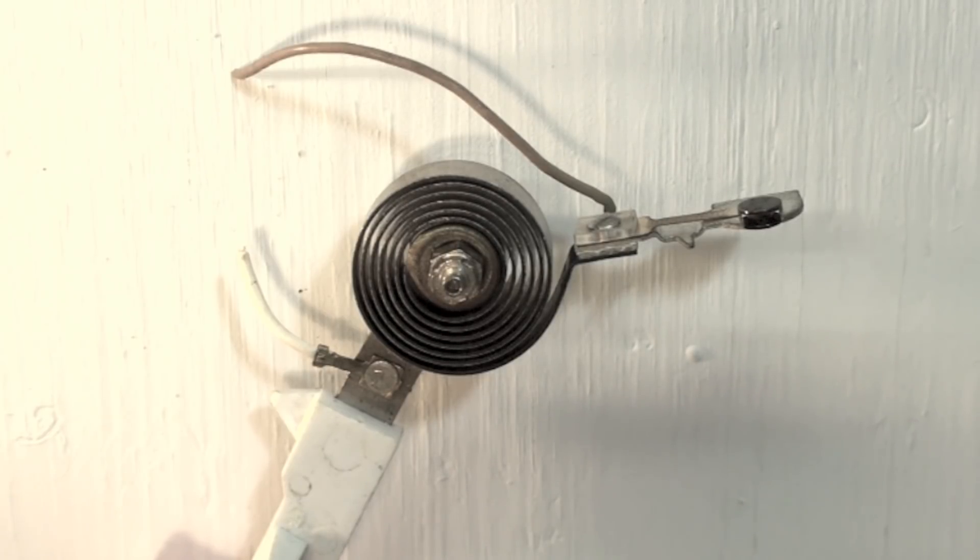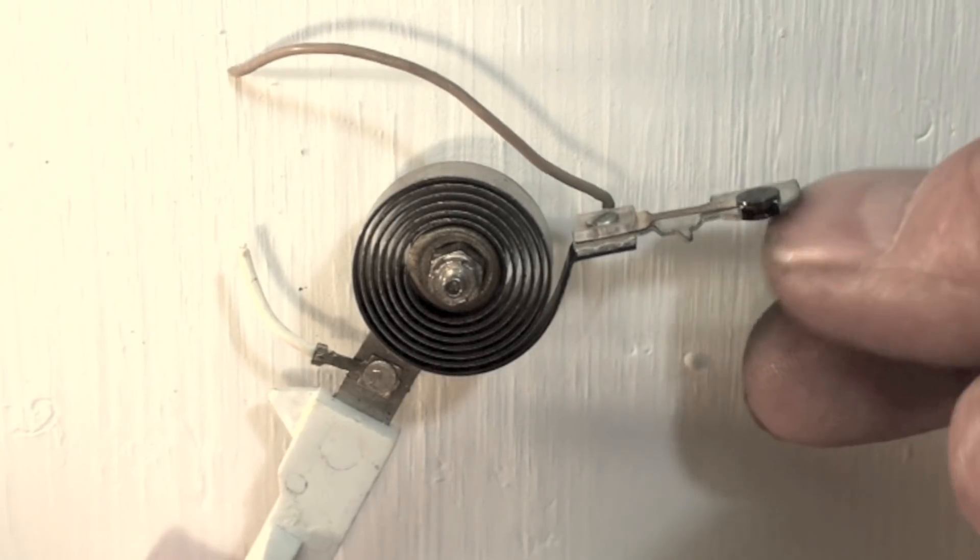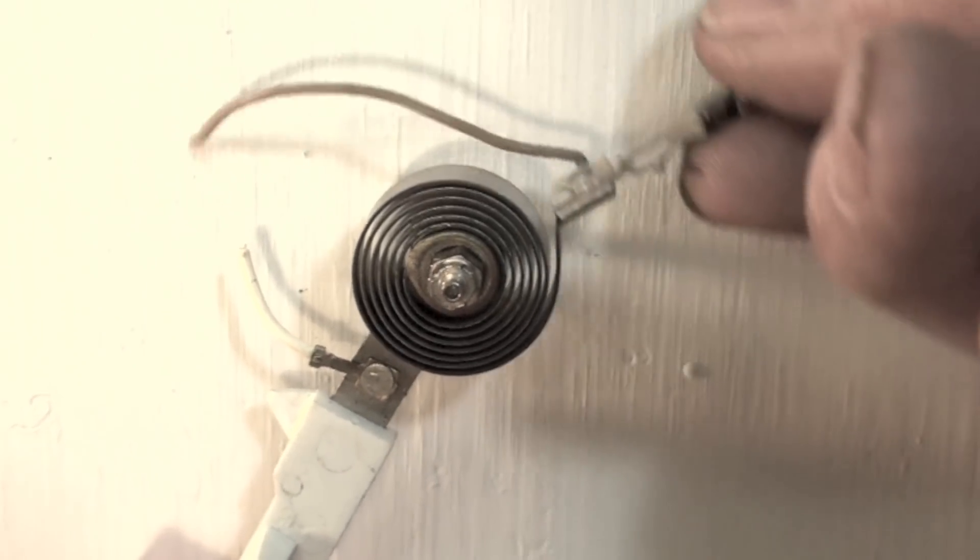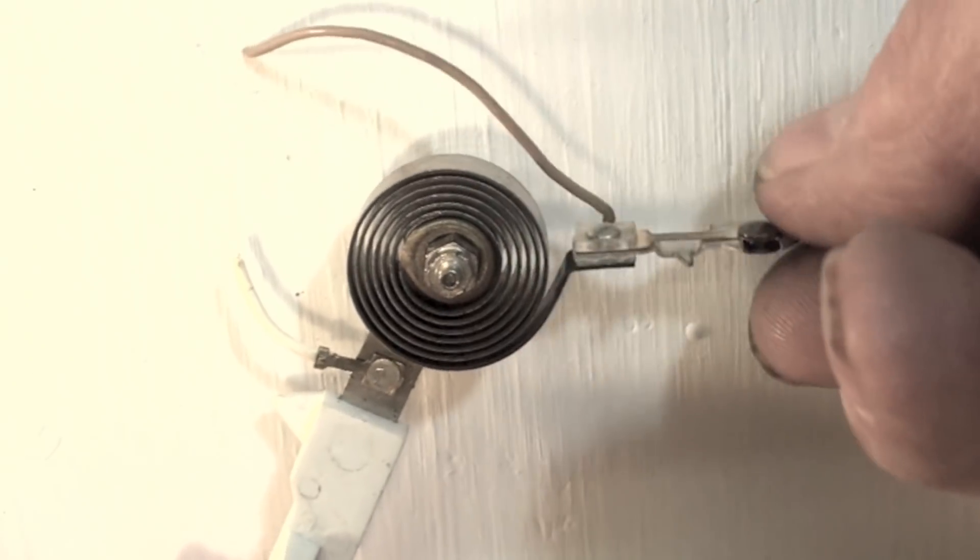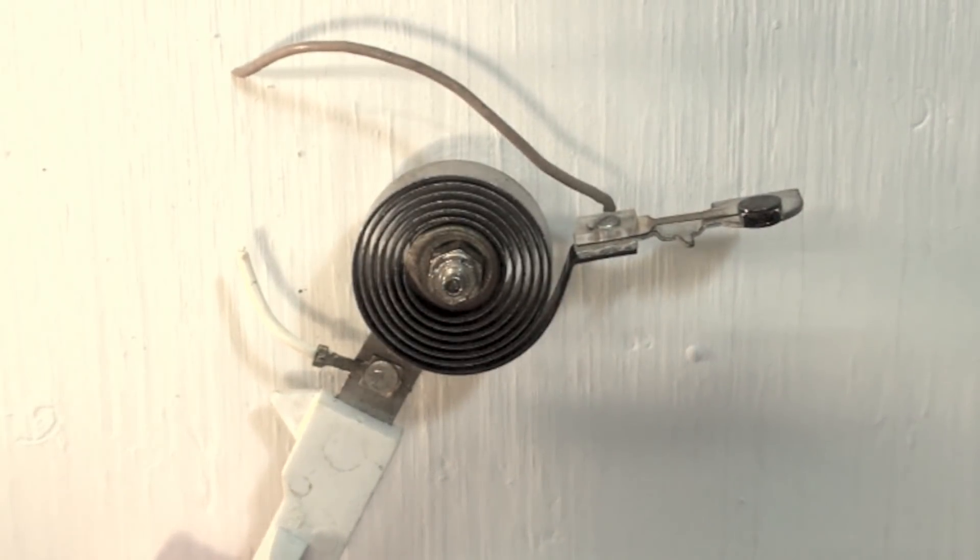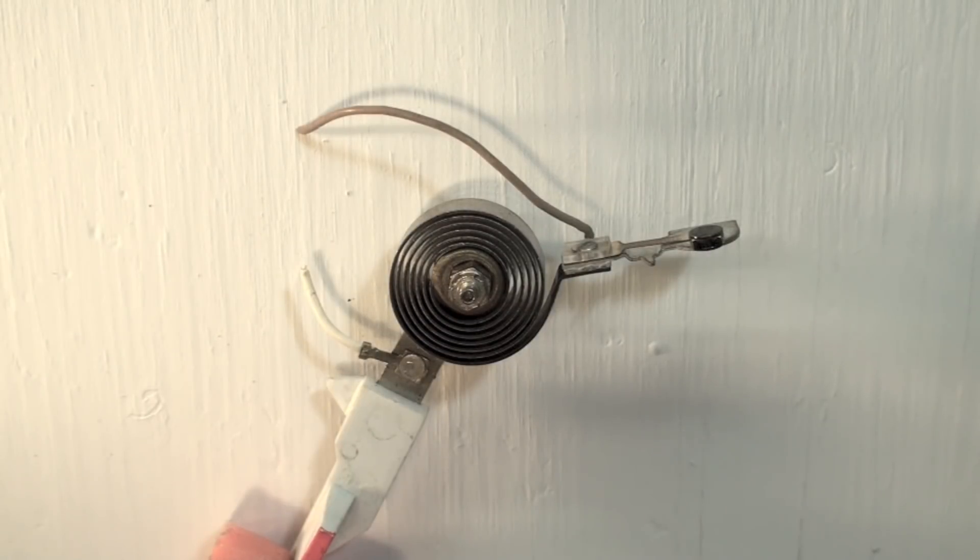When I warm it up or cool it down, this little doohickey here is going to move back and forth because it gets longer on one side than it is on the other. The steel does not expand as much for a given temperature change as copper does, so it kind of unwinds or winds up. I'll show you how it works by adding a little bit of heat to this thing.